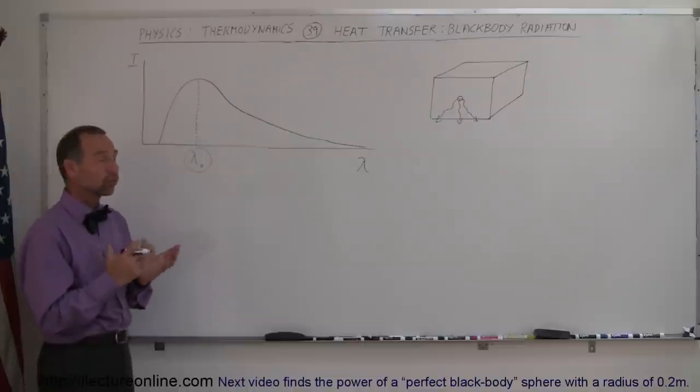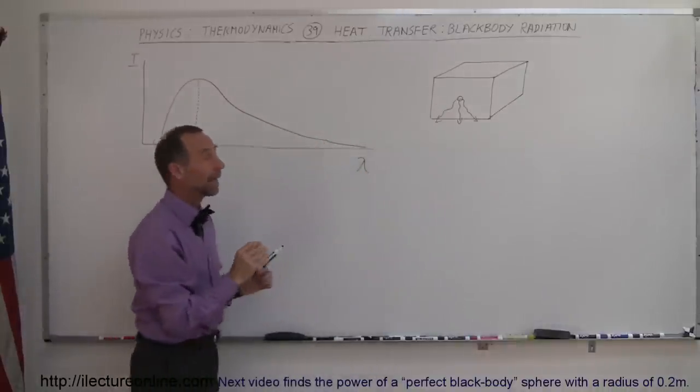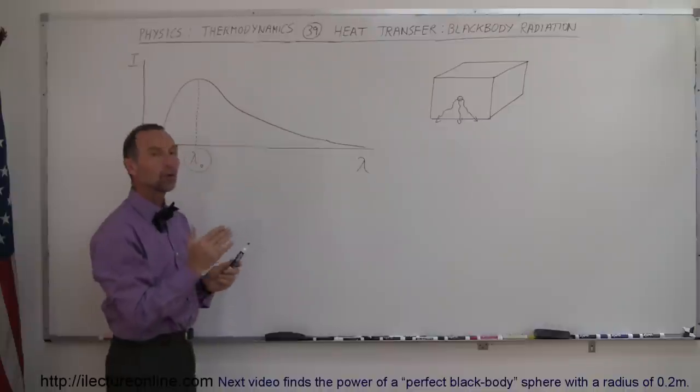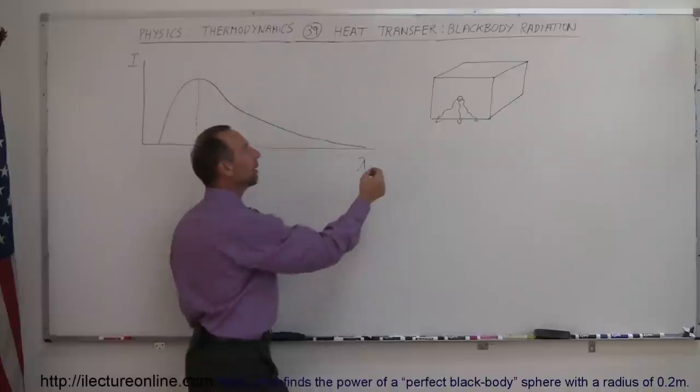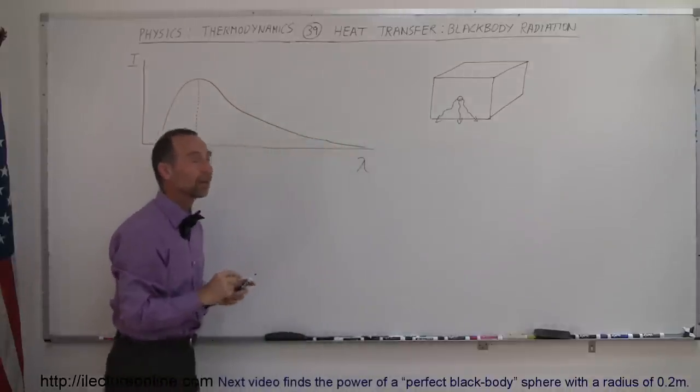The best way to illustrate that is to take a box, completely enclose the box like we have over here, paint the walls on the inside black, and then make a tiny little hole so small that virtually no light will actually enter the box. There will be some radiation coming out of the box which depends upon the temperature of the walls on the inside of the box.